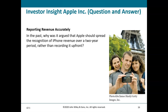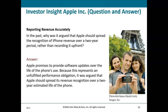Why was it argued that Apple should spread iPhone revenue recognition over two years rather than recording it upfront? Because Apple promised to provide software updates — creating unfulfilled performance obligations — so they spread the revenue over that two-year life.